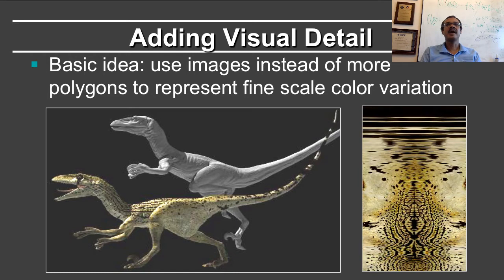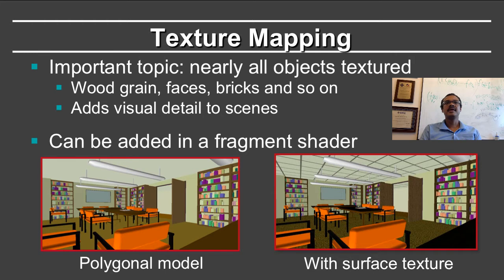However, with texture mapping, I can represent the 3D geometry at a relatively coarse scale, while adding detail in an image-based way — having an image which encodes the fine-scale texture detail. Texture mapping is very important in practical computer graphics; almost all objects will end up being texture mapped. In the real world, essentially all objects have some kind of texture, whether it's wood grain, a face texture, or bricks. This adds image-based visual detail to scenes, making them look much more complicated and interesting even if the geometry is very simple.